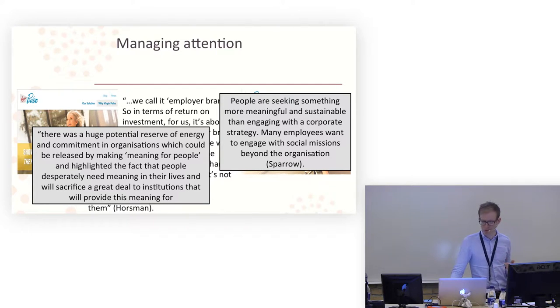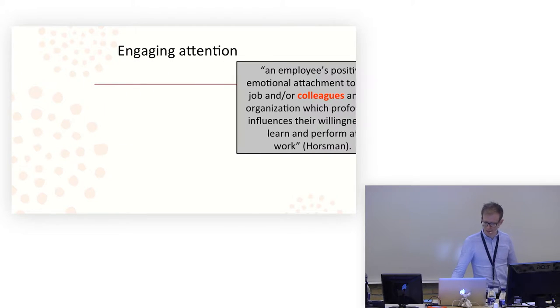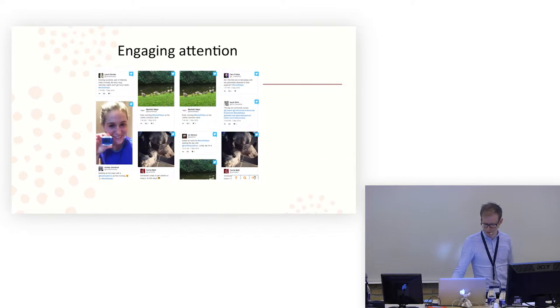And again, from the management literature, people are seeking something more meaningful and sustainable than engaging with a corporate strategy. Many employees want to engage with social missions beyond the organization. So this is partly the rationale for kind of corporate social responsibility, but also for these kinds of programs. And that social, that mission might actually be quite individualized, like with those Virgin Pulse kind of images. It's actually about developing your self project, becoming happier, healthier, this kind of thing. But this is about another kind of engagement. This is the point about network connections I was making. So just again, just to return to these quotations where I've highlighted, it's about making meaningful connections to others, and it's about an emotional attachment to your colleagues. So not just emotional attachment to your boss or your organization, but to those around you. And I think that these kinds of programs are useful for this as well.